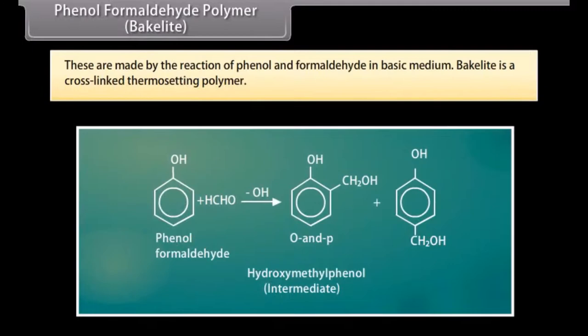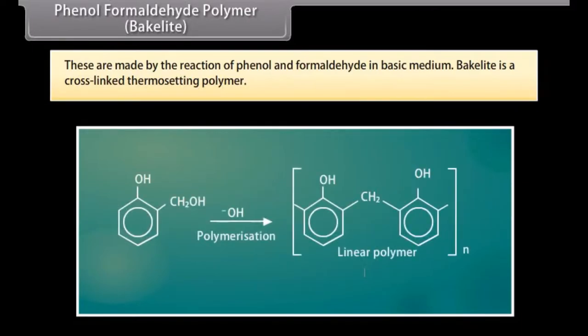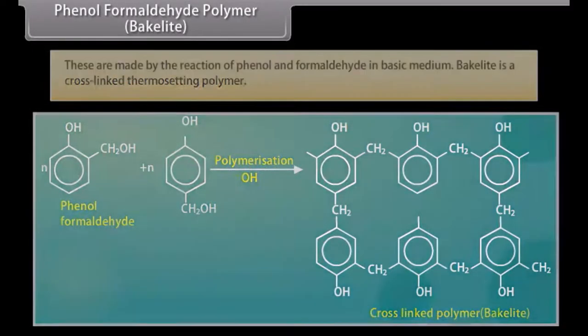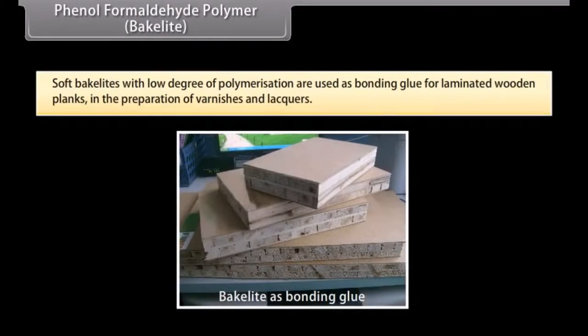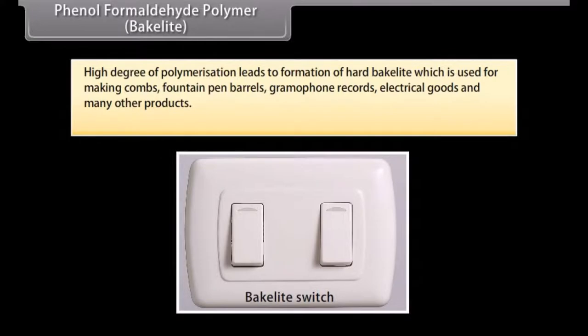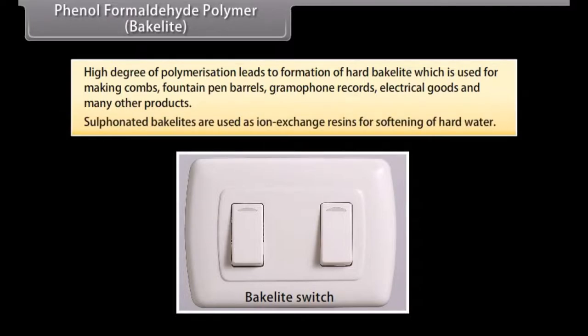Phenol formaldehyde polymer (Bakelite) is made by the reaction of phenol and formaldehyde in basic medium. Bakelite is a cross-linked thermosetting polymer. Soft Bakelite with a low degree of polymerization is used as bonding glue for laminated wooden planks and in preparation of varnishes and lacquers. High degree of polymerization leads to hard Bakelite, used for making combs, fountain pen barrels, gramophone records, and electrical goods. Sulphonated Bakelites are used as ion exchange resins for softening of hard water.